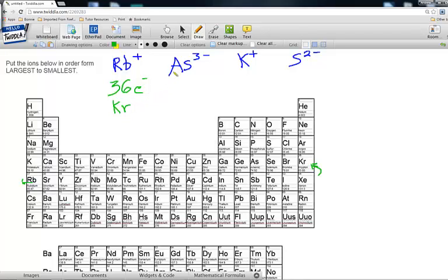Next, As. As is here. As has a negative 3 charge. Therefore, it's gained 3 electrons. So it's gone 1, 2, 3. It's also become isoelectronic to krypton or have the same electrons as krypton. So it has 36 electrons, just like krypton.